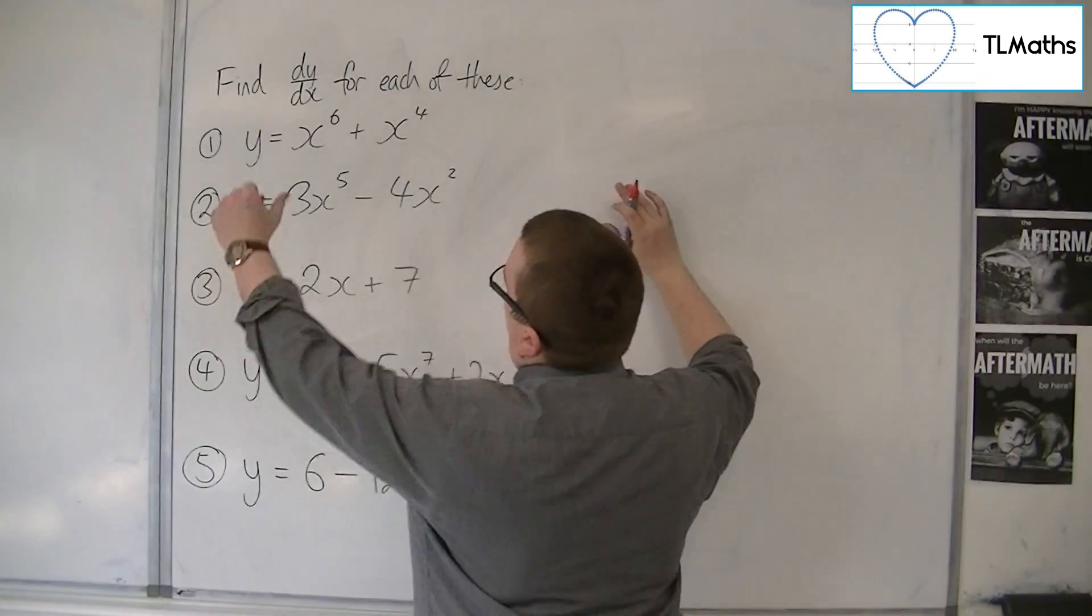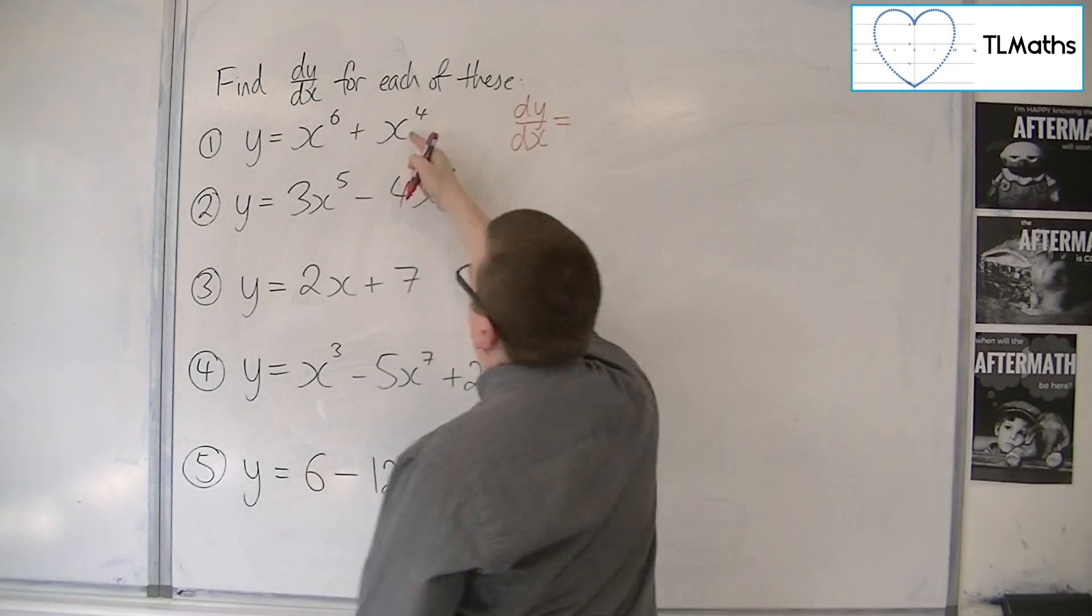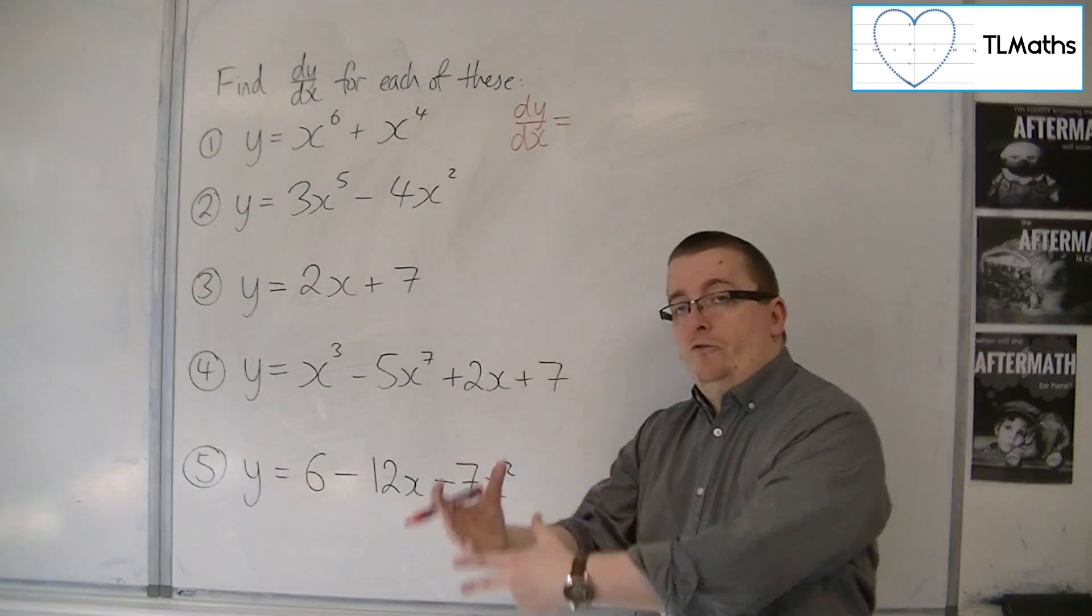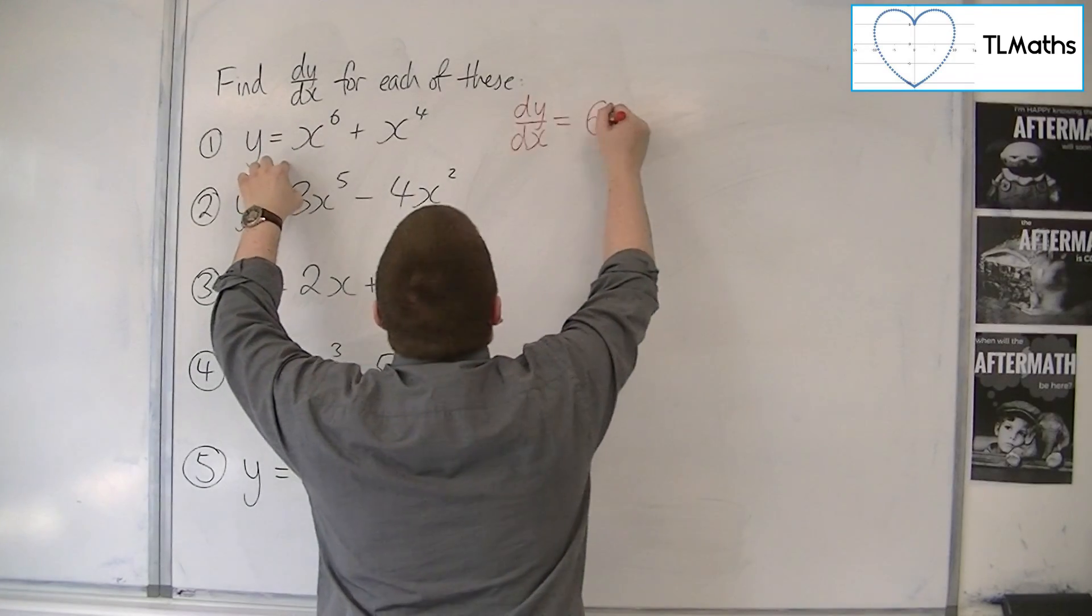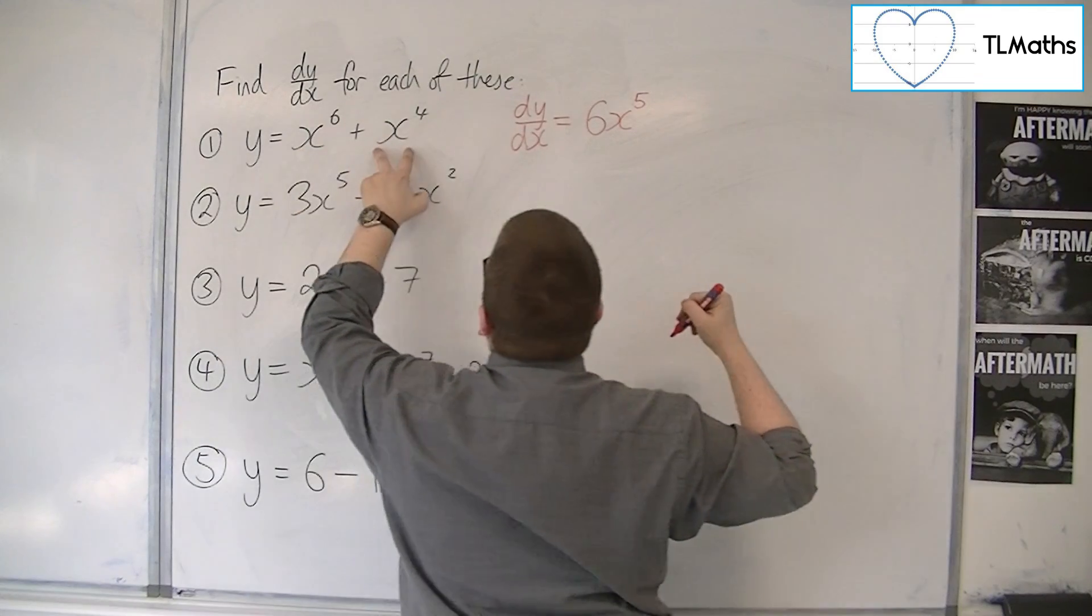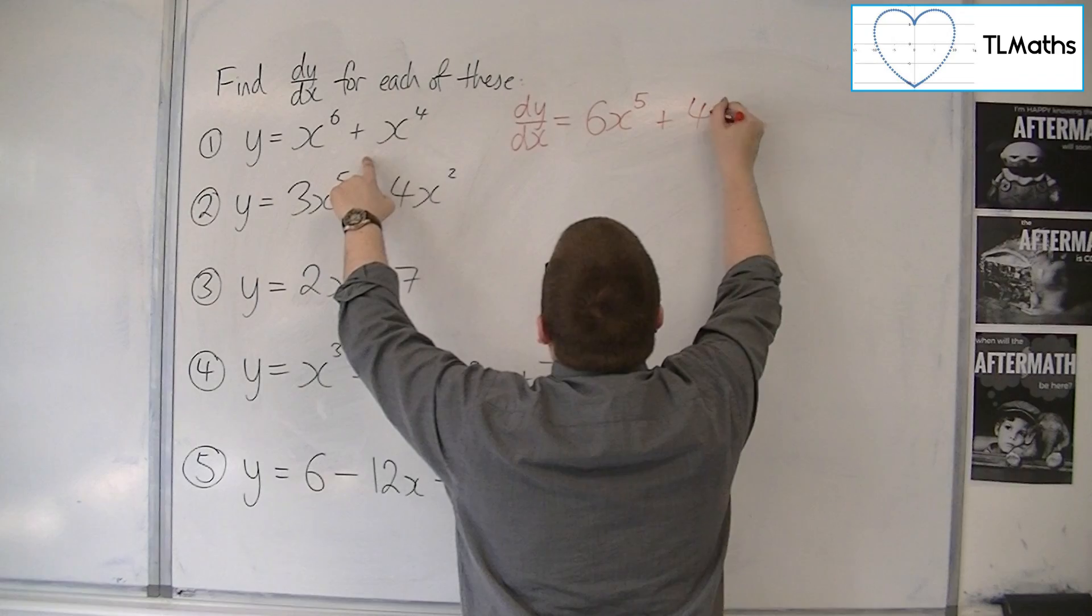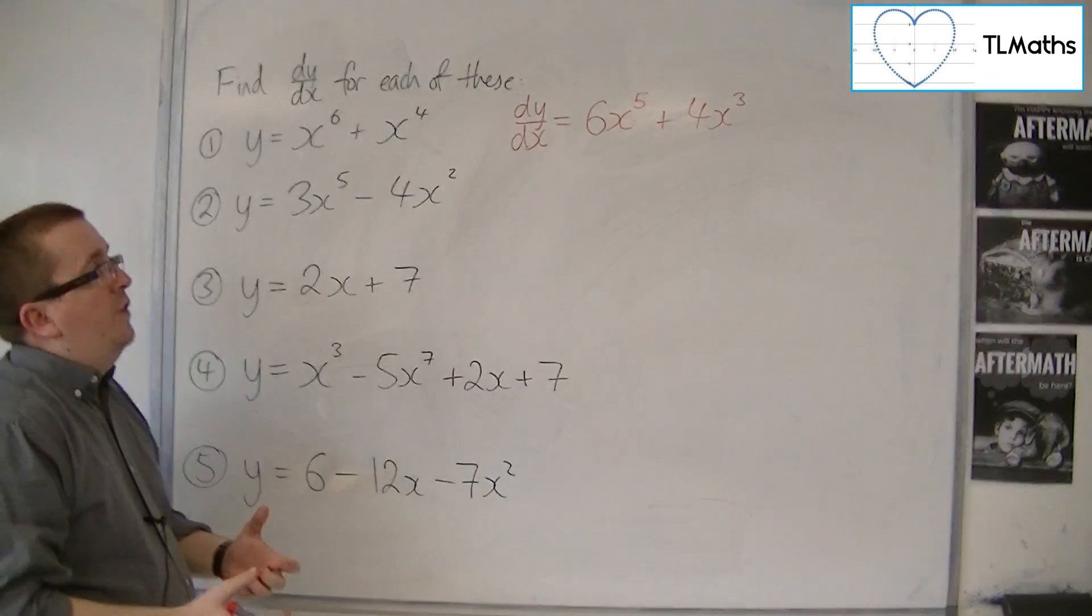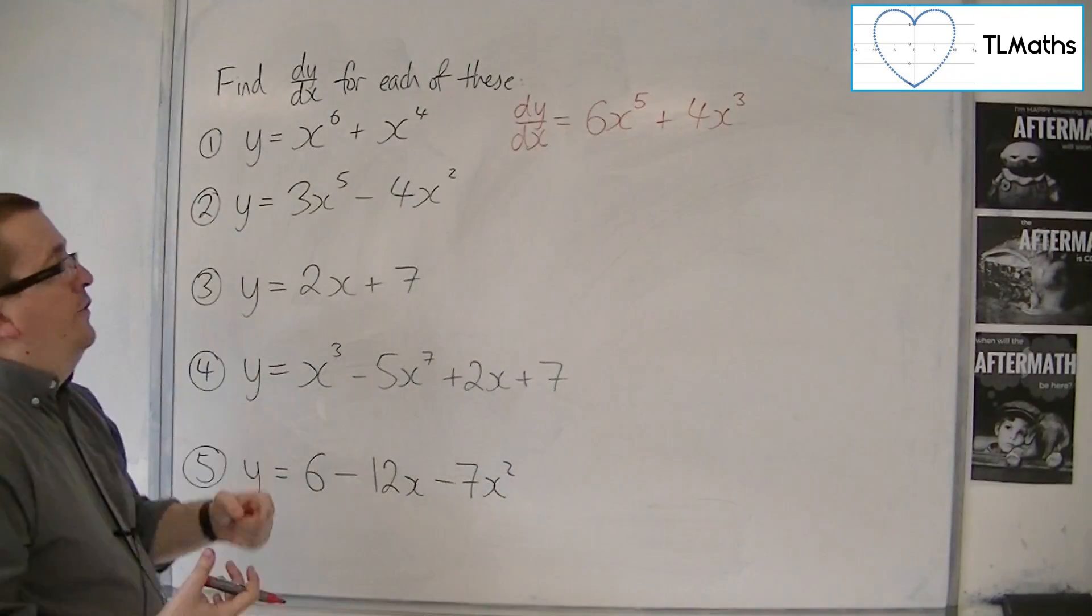I'm going to start off with the top one. When we differentiate with just x's like this, the power comes down to the front and we take one off the power. So the 6 comes down to the front and we subtract 1 from the power. So we'll have 6x^5 there, and then we're going to have plus 4 coming down to the front and then taking 1 off the power. So we'll get 6x^5 + 4x^3, and that is the gradient function of the first one.